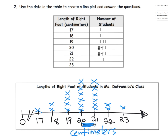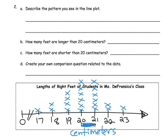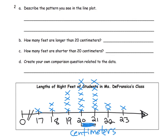And that is our line plot. Now we can start using the line plot to answer questions. We can describe a pattern — once again we see that beautiful bell curve. When you have hardly anything on the ends and a big fat middle, that's called a bell curve because it kind of looks like a bell. We can also answer questions like 'How many feet are longer than 20 centimeters?'